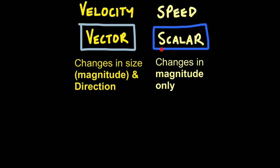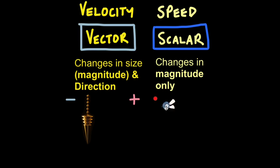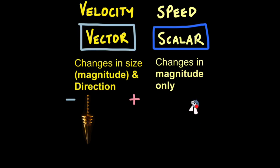A scalar quantity only changes in size, or magnitude — so speed can get greater or smaller. Velocity, however, is a vector, meaning it changes in both size (magnitude) and direction. So this fly has speed right now — quite a fast speed — but it would be very difficult to calculate its velocity because its direction is always changing.